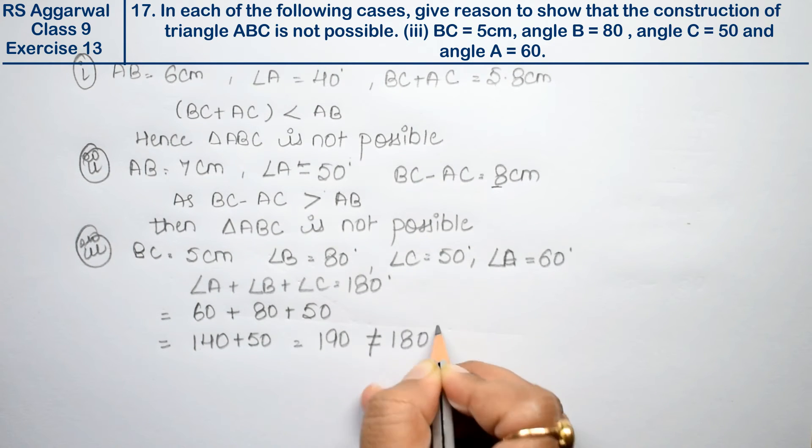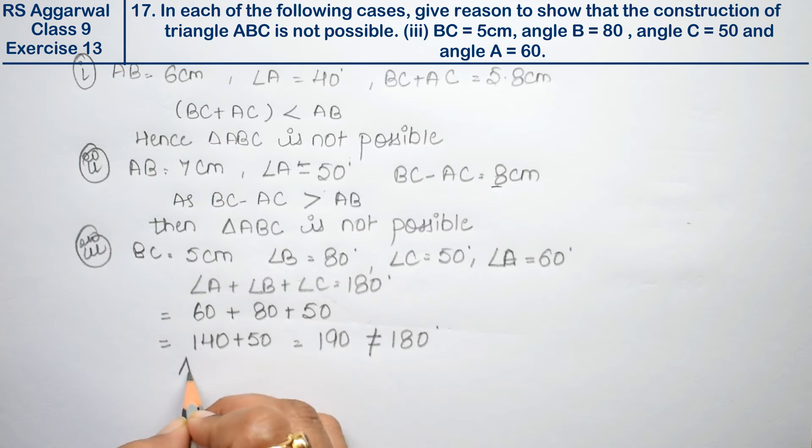A is 60 degrees. Hence, triangle ABC is not possible.